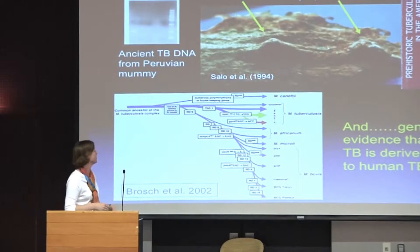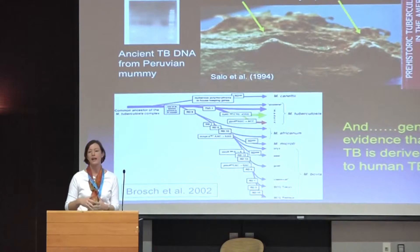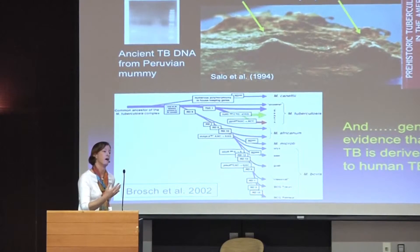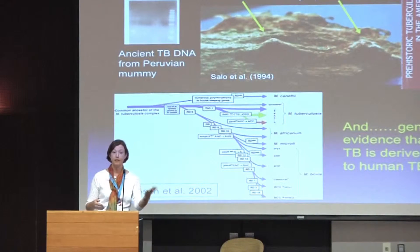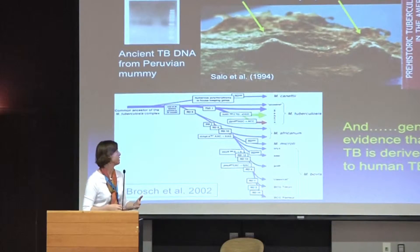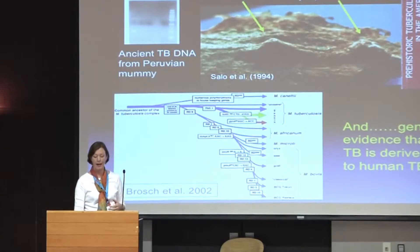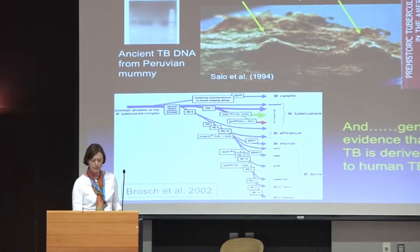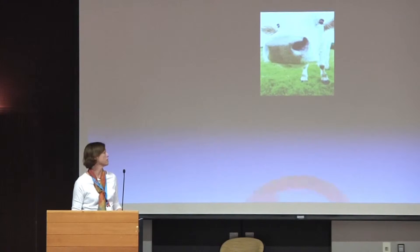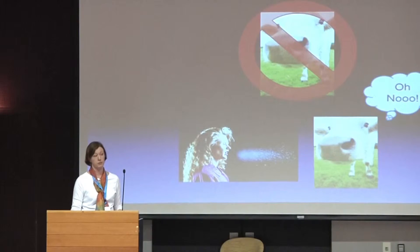Parallel to this, we have increasing evidence and information from modern strains. People in the clinical world were mostly interested in whether it causes TB and how to treat it, but people began looking at the genetic diversity in the strains. What they noticed, starting in 1998 and then with Roche et al. in 2002, is that the so-called animal strains are more derived than the human strains. This kind of put a kink in the notion that cows gave us TB and actually suggests that we might have ultimately given it to them.